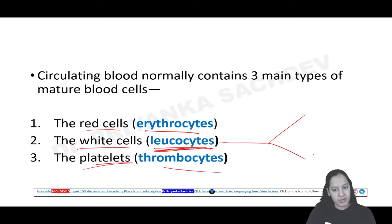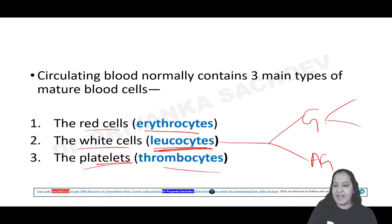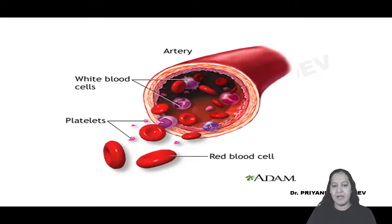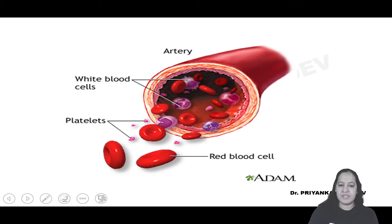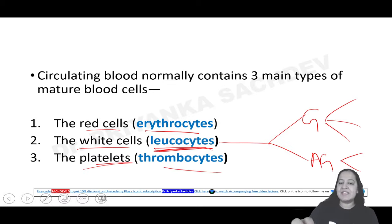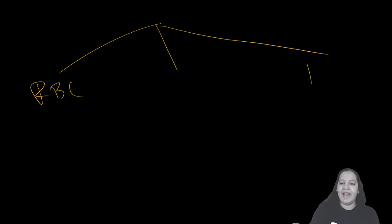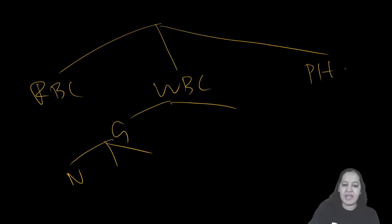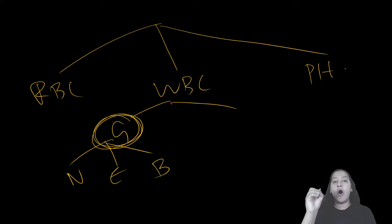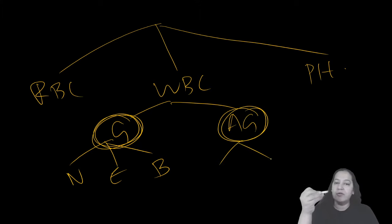WBCs are of two types: granulocytes and agranulocytes. Granulocytes are of three types and agranulocytes of two types, so there are five types of WBCs total. You can see blood containing various types of cells - RBCs, the five types of WBCs, and platelets, making seven types total. Granulocytes - neutrophil, eosinophil, and basophil - are named because they have granules in their cytoplasm, while agranulocytes - monocytes and lymphocytes - do not have granules in their cytoplasm.